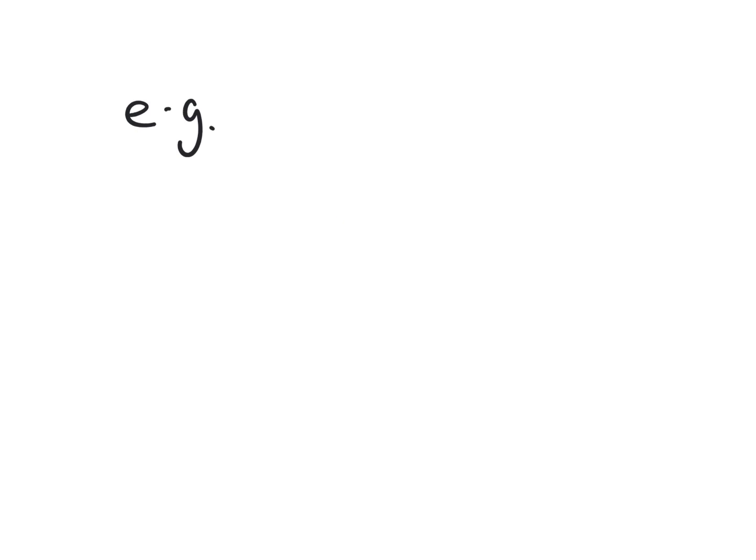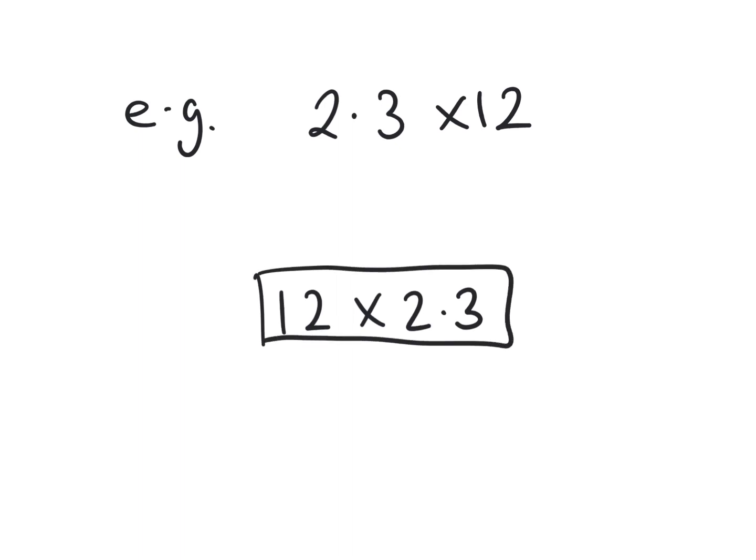The next option is looking at a two-digit times a decimal. So let's have a look, we've got 2.3 times 12, or 12 times 2.3—obviously the order doesn't matter. So there's two ways of looking at this. The first option, if I flip around the calculation, I can partition—I can break the value up. So let's have a look if I take the 10.